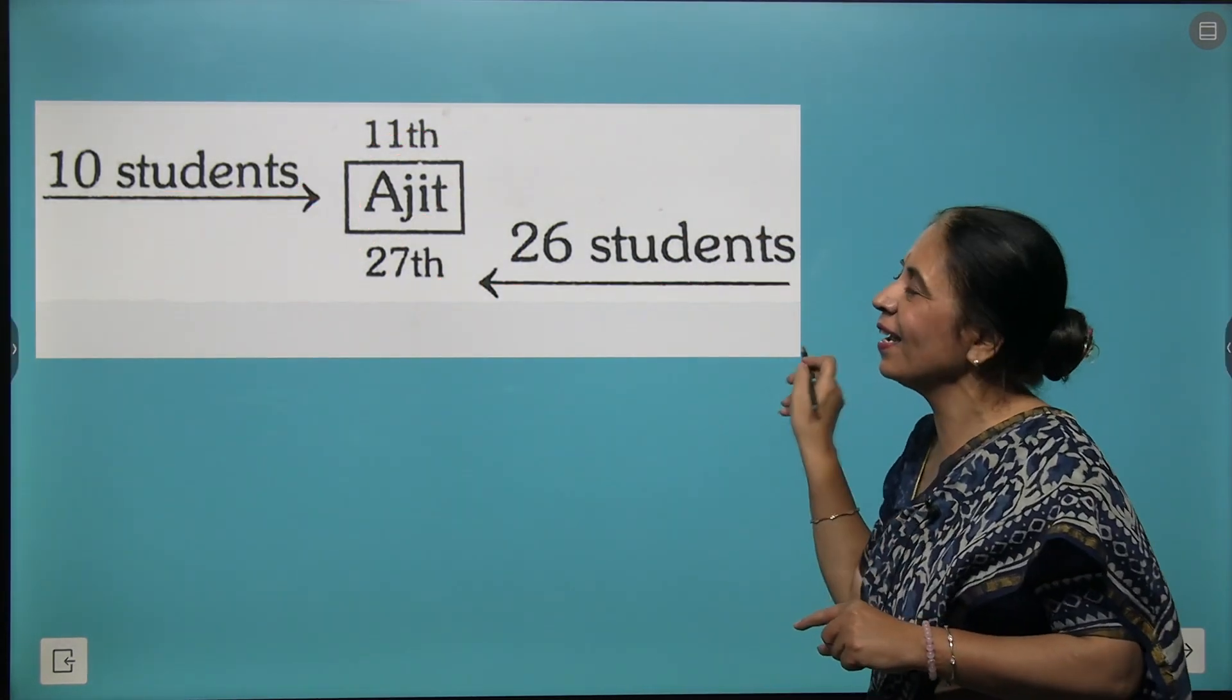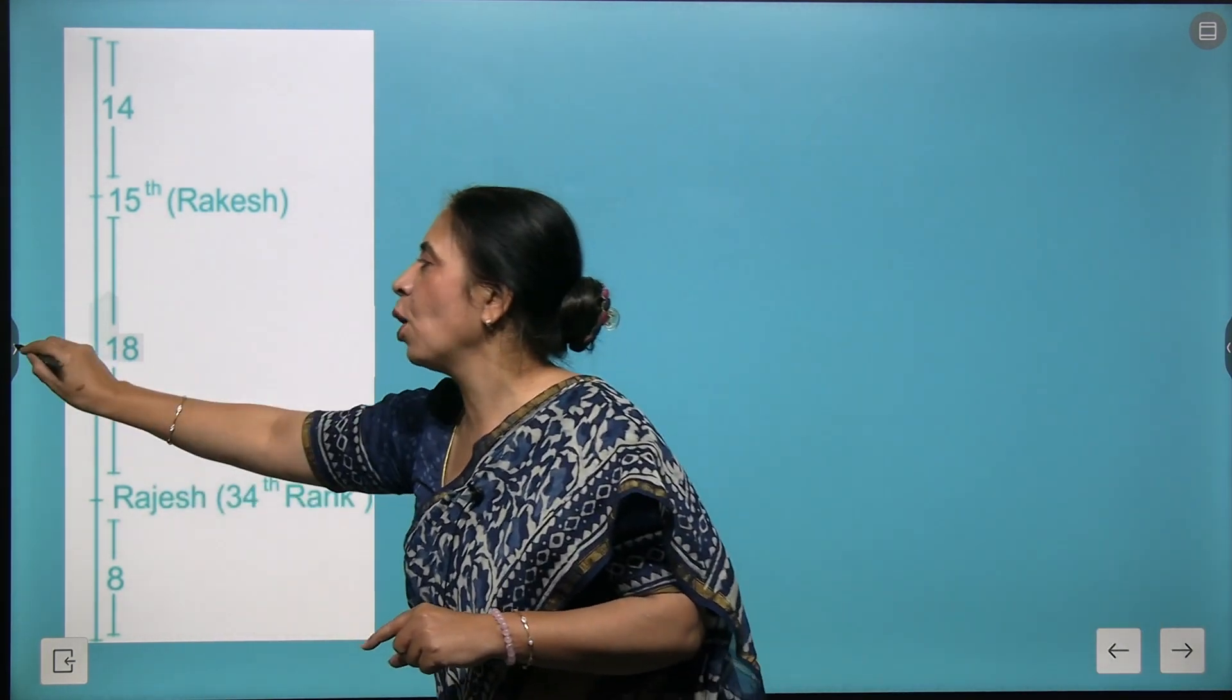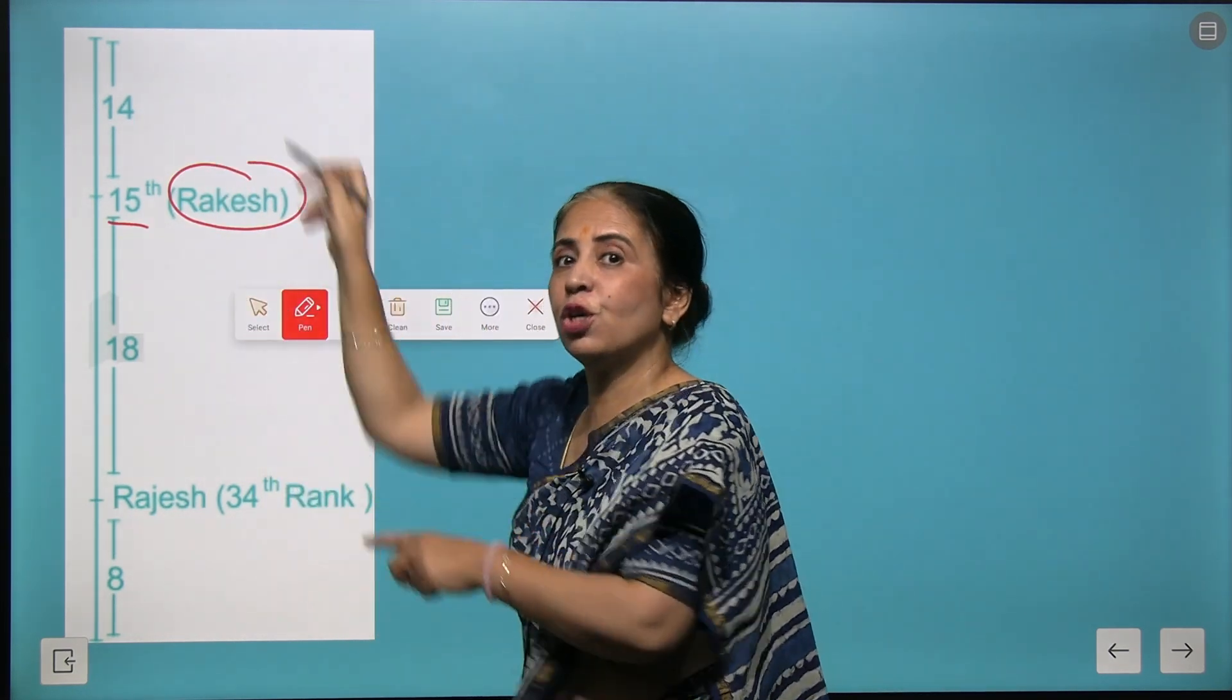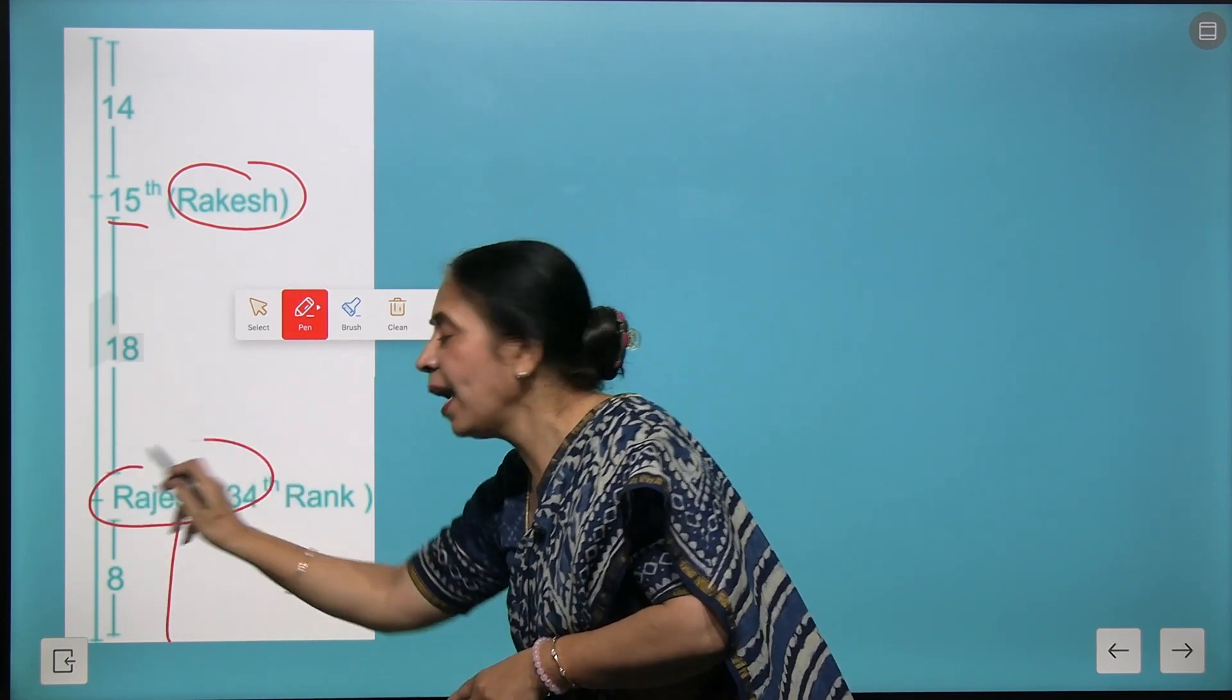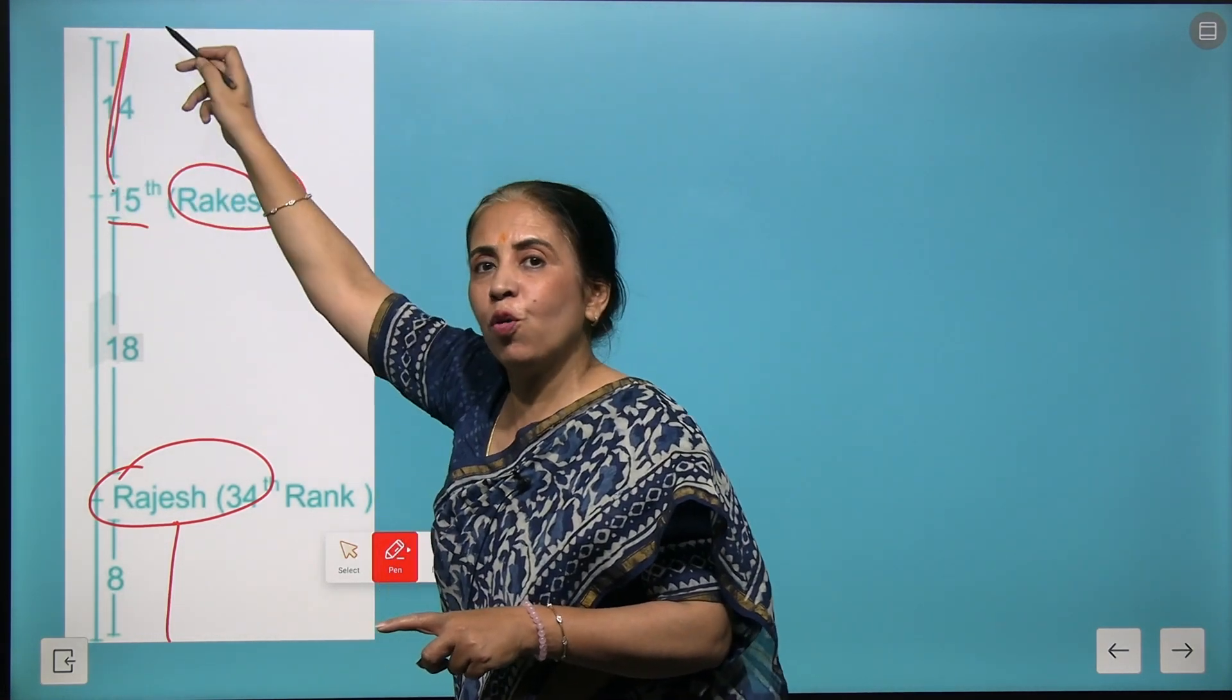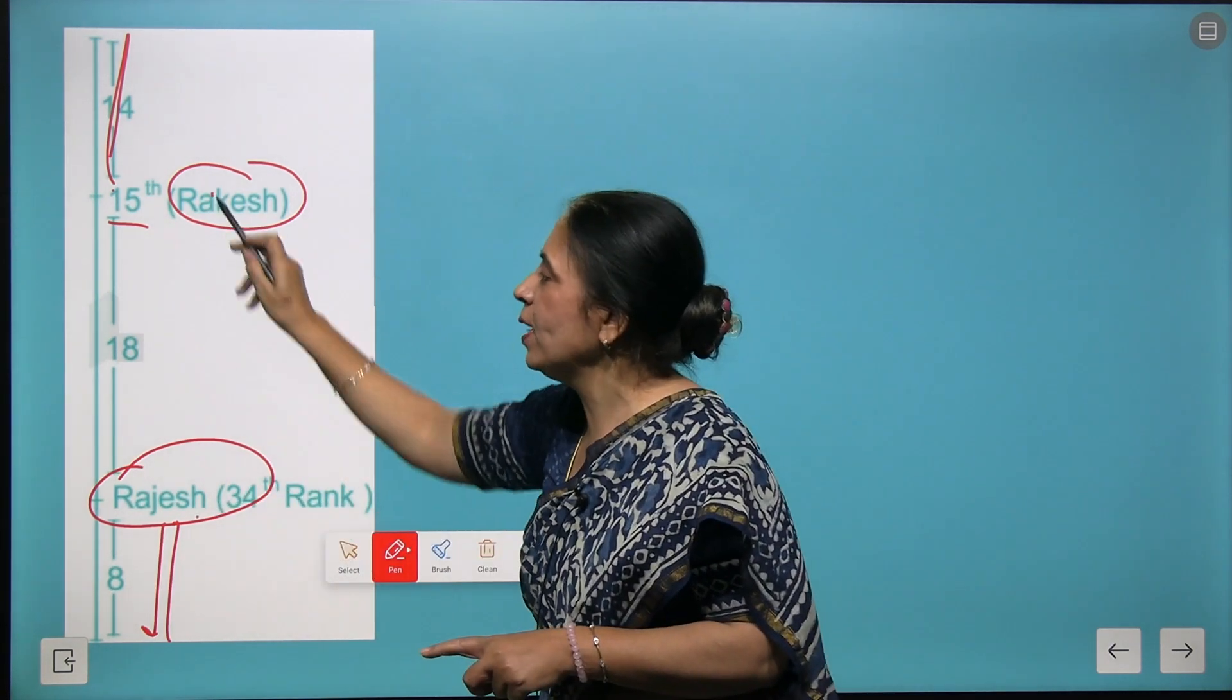Let's look at Rajesh and Rakesh who are standing from top to bottom. We observe that Rakesh is at 15th position from the top and Rajesh is at 9th position from the bottom. So we conclude that we have 14 children standing before Rajesh and 8 children are standing after Rakesh.